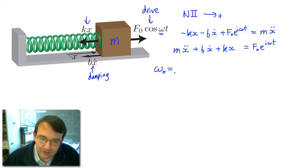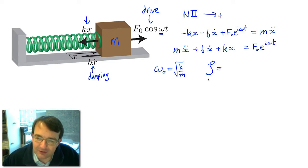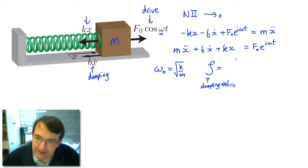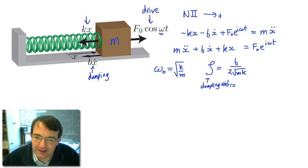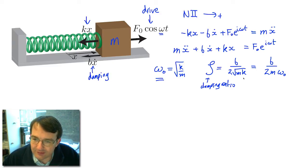ω₀ is the natural angular frequency of the undamped mass-spring system, equal to √(k/m). Since we have a damping force, we introduce the damping ratio ζ, defined as b over 2√(mk). By multiplying numerator and denominator by m, we can rewrite this as b over (2mω₀), using the definition of ω₀.